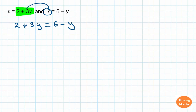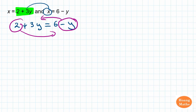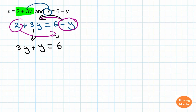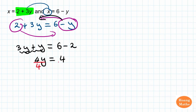Now I just move y to one side and the number to the other side. So I move the negative y over — it becomes plus y. So 3y plus y equals 6. And the 2 that I move to the right becomes minus 2. Collecting like terms: 3y plus y is 4y, and 6 minus 2 is 4. Then I divide both sides by 4, and y is equal to 1.